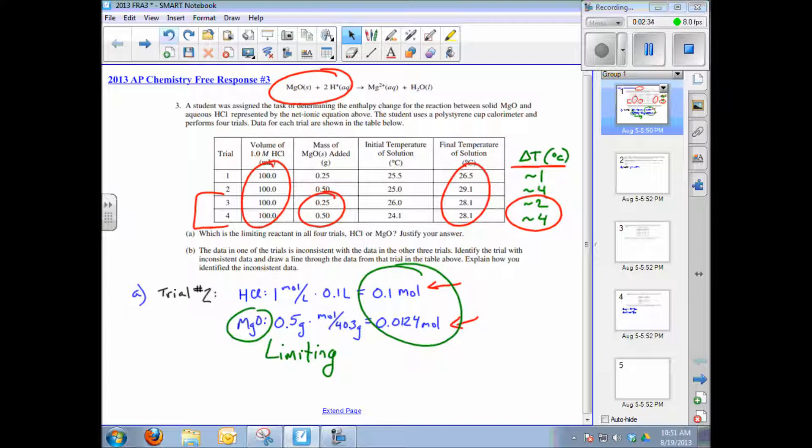Therefore, magnesium oxide, as it's consumed, is generating heat. If HCl were limiting, the same amount of heat would be generated in each trial, and that's not true. This part of the question could be answered by simply saying the amount of heat generated depends on magnesium oxide. Remember, heat is a product of the reaction, so the amount of heat generated depends on magnesium oxide, the limiting reactant, and not the HCl.